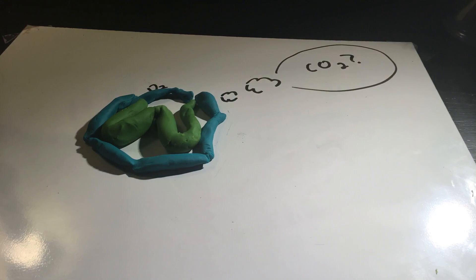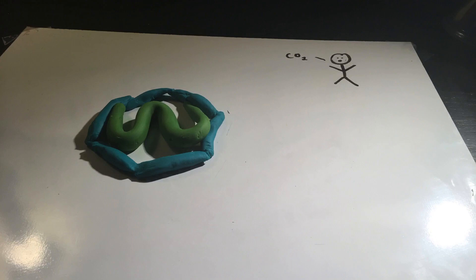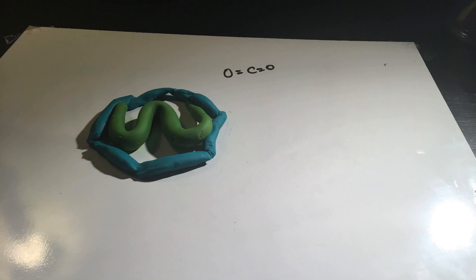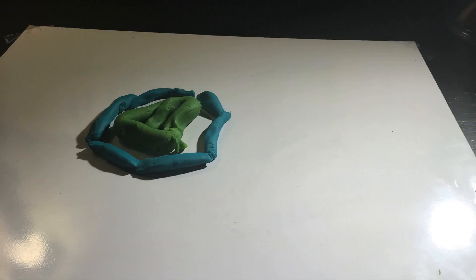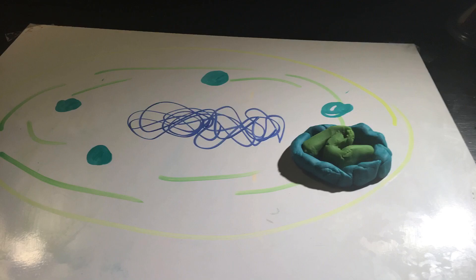This is where carboxosomes become a very important adaptation. Carboxosomes suppress this reaction and promote the carboxylase reaction when rubisco uses CO2 as it should. Therefore, carboxosomes keep rubisco working as effectively as possible by promoting the carboxylase reaction.